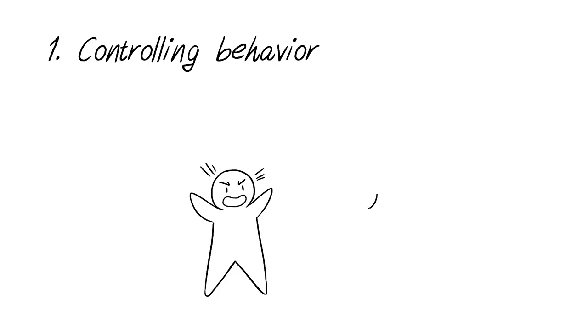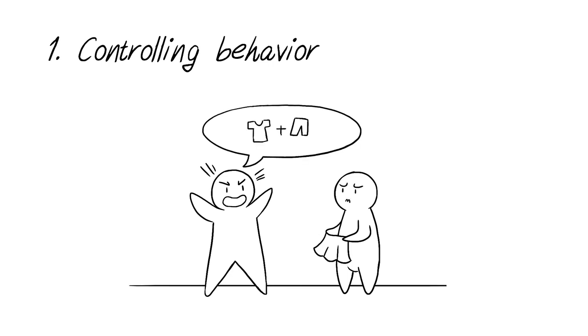1. Controlling Behavior. In many abusive relationships, the abuser will want to control every aspect of their victim's life. They might want to know who their victim is talking to, who they are planning to meet up with, or where they are going. This can even flow into them controlling what their victim wears, how their makeup looks, or how they carry themselves.